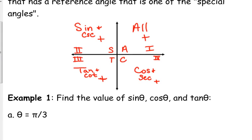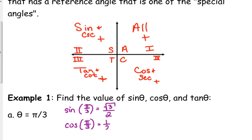So what we're going to use this for is, if I give you an angle — say pi over 3 — find the value of sine, cosine, and tangent of pi over 3. Obviously this one's in the first quadrant, so it's not all that exciting. This is coming straight off your table. The sine of pi over 3 is equal to the square root of 3 over 2. The cosine of pi over 3 is equal to 1 half, and the tangent of pi over 3 is the square root of 3.